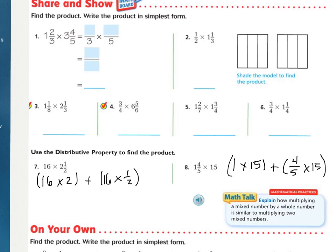Press pause while you work on the share and show problems. On 7 and 8, where it talks about the distributive property, I have set it up for you. So remember, parentheses first, then you'll just add the two answers that you get together to find your whole. And all I did was break up our mixed numbers into smaller multiplication problems.